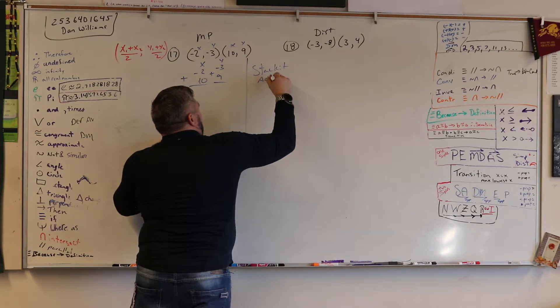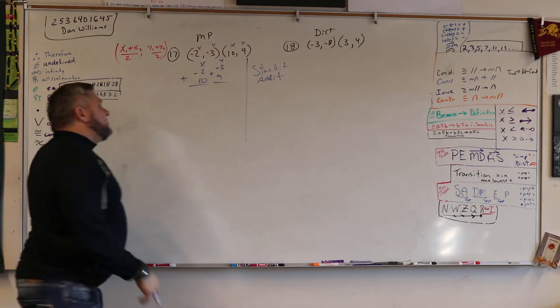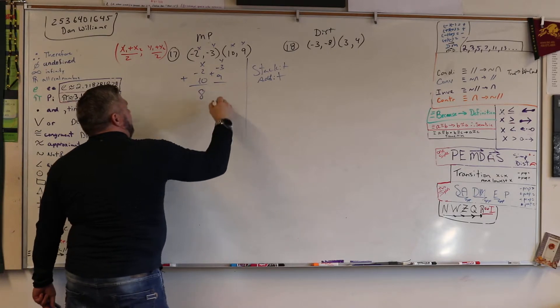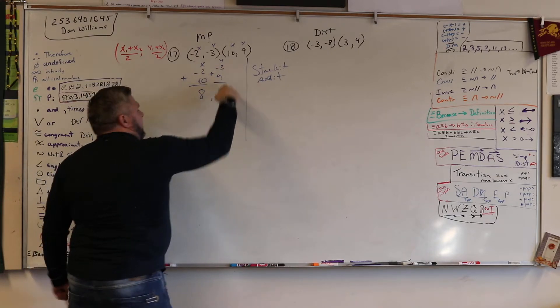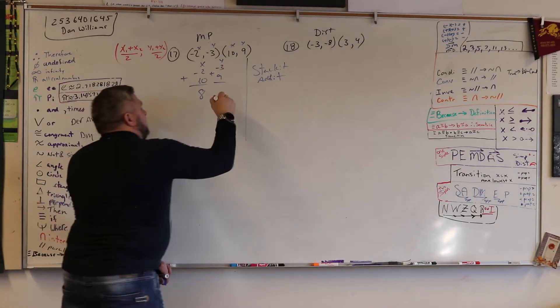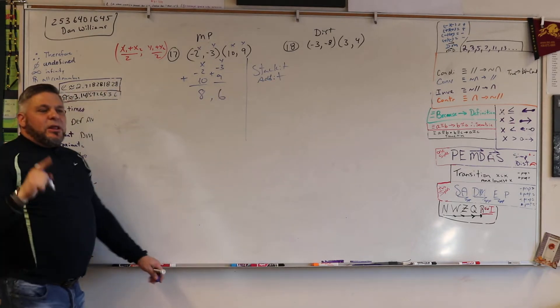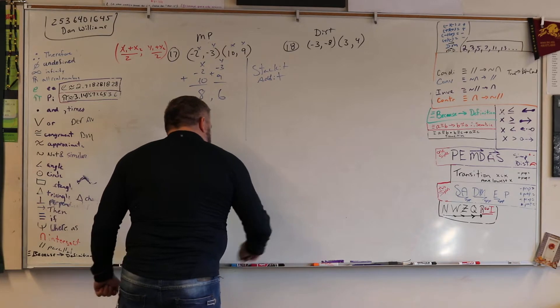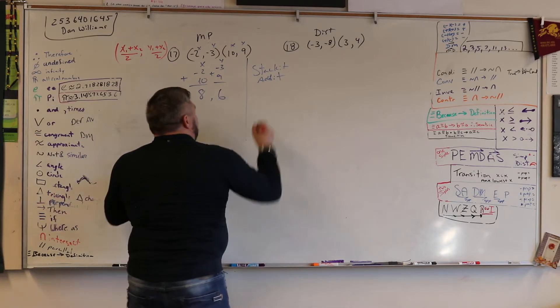What's negative 2 plus 10? 8. What is negative 3 plus 9? 6. And then what do you do? Stack it, add it, and what's the next step? Divide it.